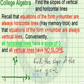Remember the memory trick: hay, horizontal as y equals. And also that equations of the form x equals any number are always vertical lines. Conveniently, all horizontal lines have a slope of 0, and all vertical lines have no slope.